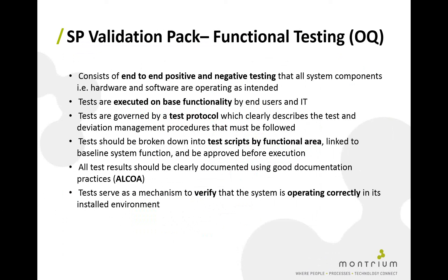Tests are executed on the basis of functionality and are typically executed by end-users and IT. We have a test protocol governing how testing is performed and documented. Tests are broken down into test scripts by functional area to maintain granularity in case we need to re-execute in the future, and each test is linked to a baseline system function. Tests must be approved before execution, and all results must be clearly documented using good documentation practices — ALCOA: Attributable, Legible, Contemporaneous, Original, and Accurate.